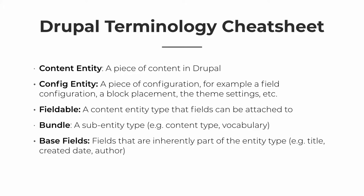First off: entity. Entity is a really vague word. An entity in Drupal is basically a piece of content — that's what you need to know. That's a content entity. In Drupal 8 we also have configuration entities, which are pieces of configuration. You create configuration entities all the time when you set up content types, add fields, and check boxes all over the place.